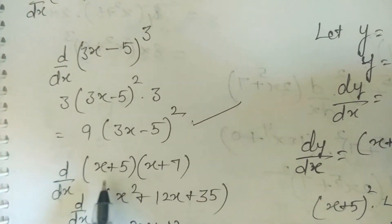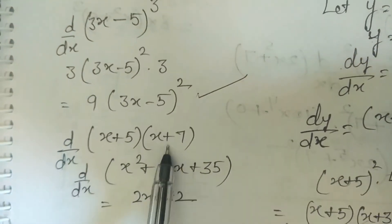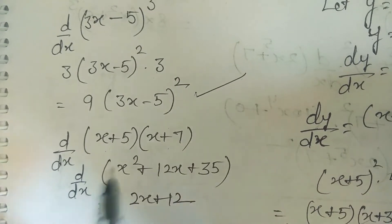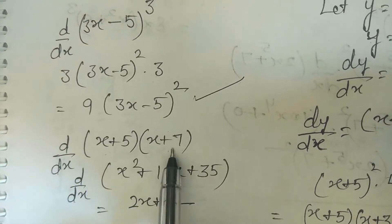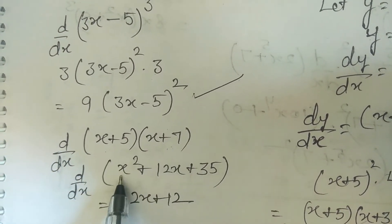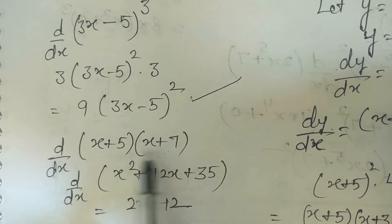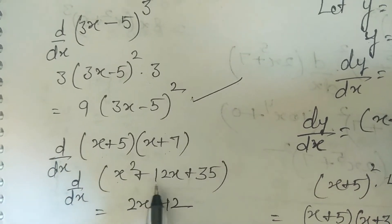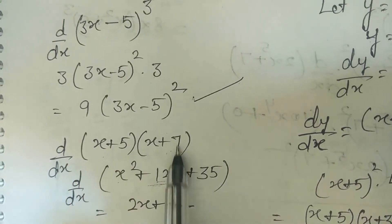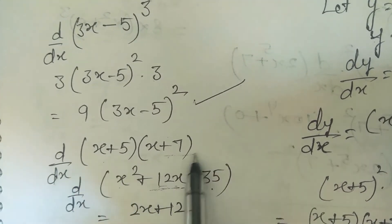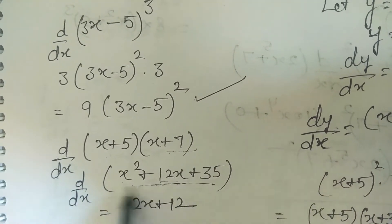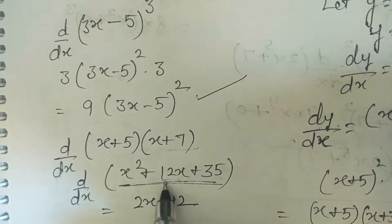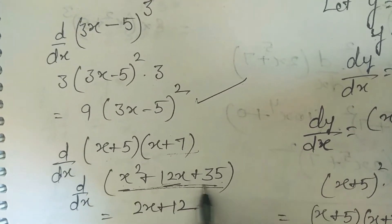Suppose the question is: find the derivative of (x+5)(x+7). We multiply first: x·x = x², x·7 = 7x, 5·x = 5x, 5·7 = 35, giving x² + 12x + 35.